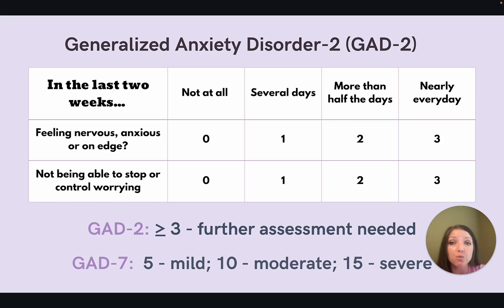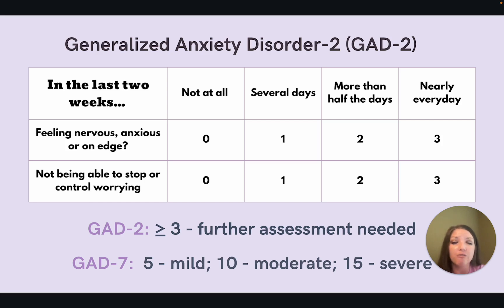Which screening tool could we move on to next? That would be the GAD-7, which includes five additional questions. In the GAD-7, the total score cutoff is five or greater for mild anxiety, ten or greater for moderate anxiety, and 15 or greater for severe anxiety.